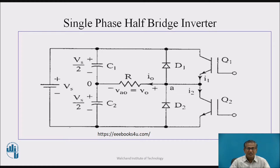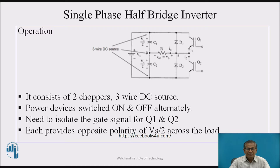Now let us look at the single-phase half bridge inverter circuit diagram. It consists of two power devices Q1 and Q2, and D1 and D2 are two feedback diodes; the load is purely resistive. This single-phase half bridge inverter is the combination of two chopper switches and a three-wire DC source. Power device switches turn on and off alternately, and it is necessary to isolate the gate signals for Q1 and Q2. Each switch provides opposite polarity of Vs/2 across the load.